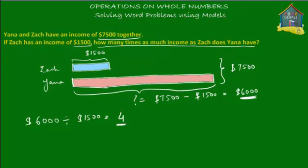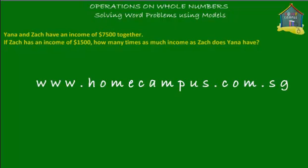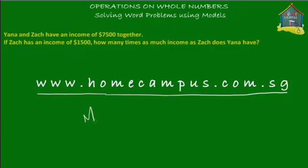That's what the question is asking you to find out, and the answer is that Yana is making four times as much money as Zach. So that's that about this word problem. To solve more word problems and to monitor how you're doing in mathematics, just visit www.homecampus.com.sg. Don't forget to practice because practice makes perfect. This is Em signing off for now. Bye-bye.